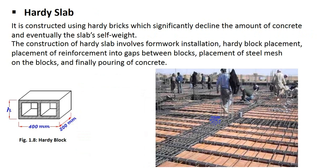Hardy slab is constructed using Hardy brick, which significantly reduces the amount of concrete and the slab self-weight. When Hardy bricks or Hardy blocks are used, they decrease the self-weight of the slab and the requirement of concrete, making it very cost-efficient. The construction of Hardy slab involves formwork installation, Hardy block placement, placement of reinforcement into gaps between blocks, placement of steel mesh on the blocks, and finally pouring of concrete.